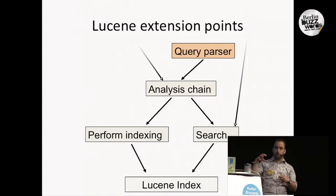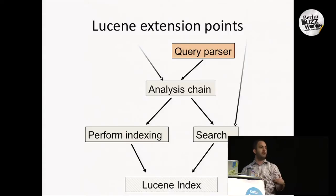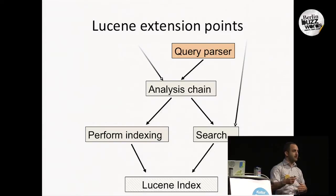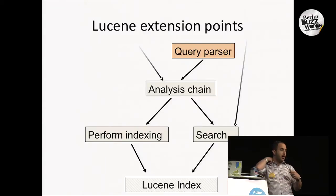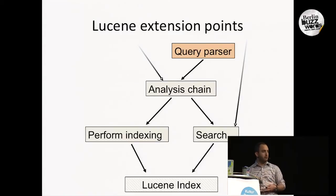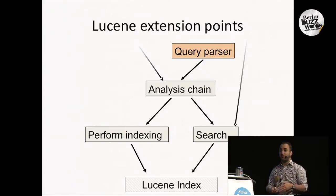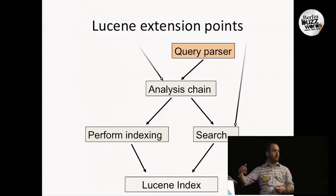The things that Lucene does can actually be integrated with. Let's start with maybe the simplest example: the query parser. When you send a search request, that can basically be a query string. The official recommendation is usually not to use a query string, because the query parser that comes with Lucene can throw exceptions and do stuff you don't really want. So you can either use other query types that Elasticsearch provides, or implement your own query parser.